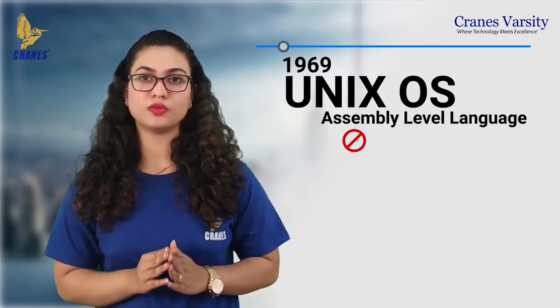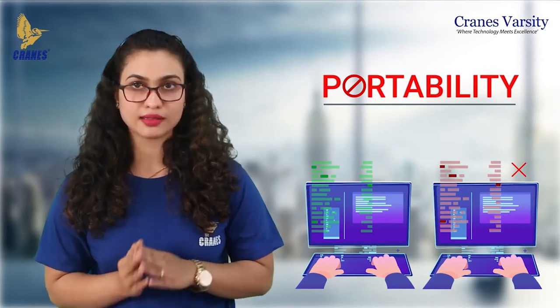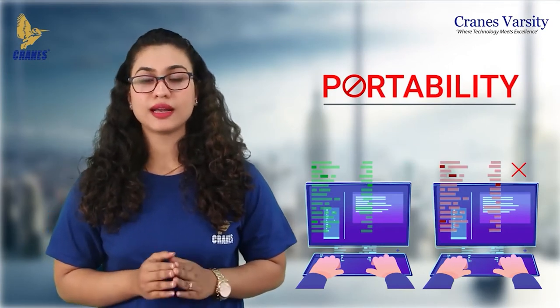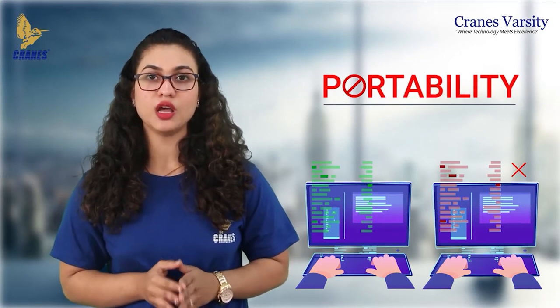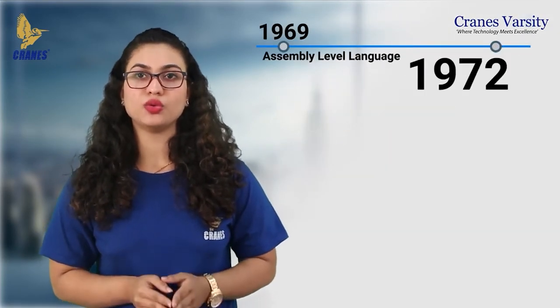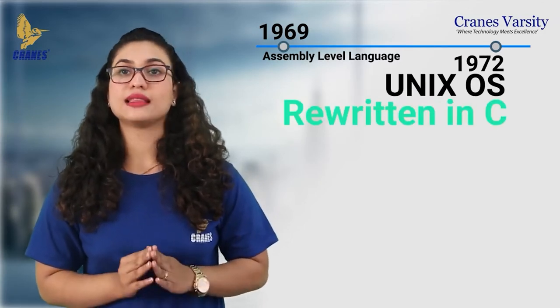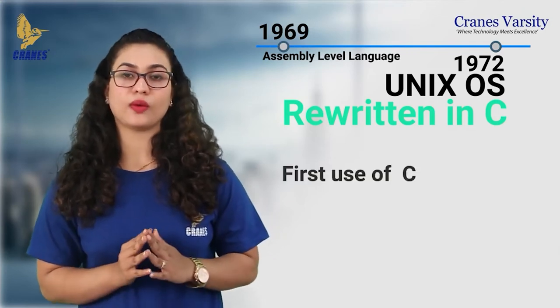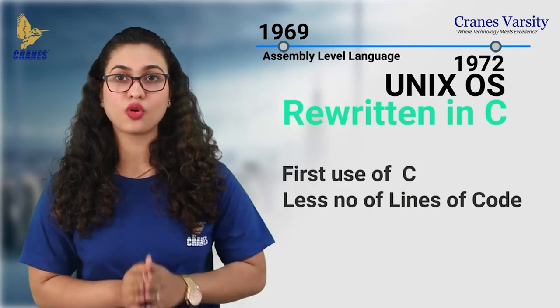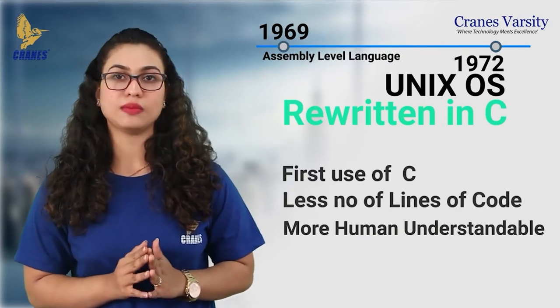But the major problem was portability. Portability means you cannot port your program from one system to another system — it would not support. Running the same code on a different platform or different machine was not supported by assembly level language, since it acts differently according to the different machine. So then, in 1972, Unix operating system code was rewritten in C programming language. They say that this was the first use of C programming language ever. C has fewer lines of code than assembly level language, and it is more human understandable.